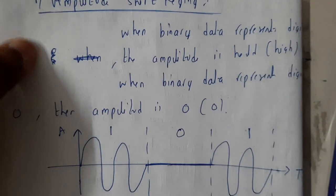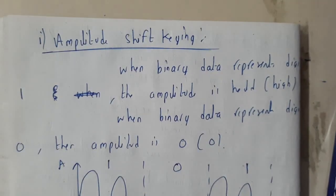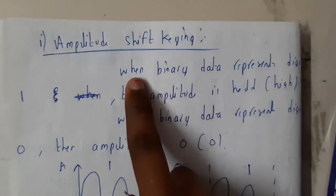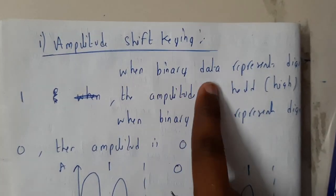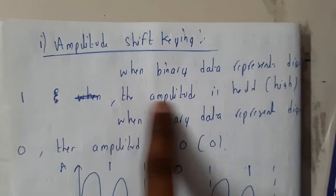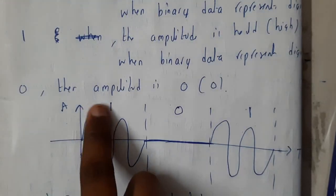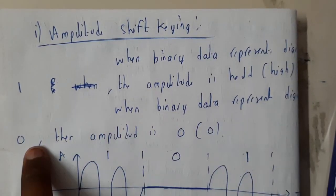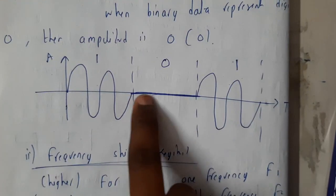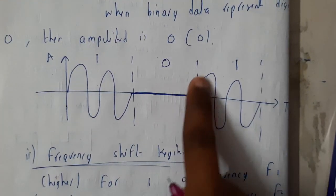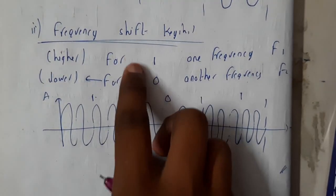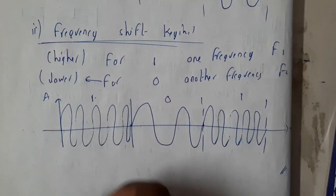The first technique is Amplitude Shift Keying (ASK). When binary data represents a digital one, the amplitude is high. When the binary data representing is zero, the amplitude is constant — that is zero. In this way we represent data using Amplitude Shift Keying.